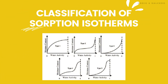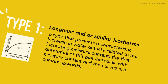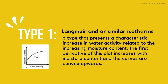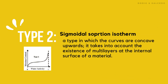Sorption isotherms are also classified according to their shape and processes. For Type 1, the Langmuir and/or similar isotherms, this type presents a characteristic increase in water activity related to increasing moisture content. The first derivative of this flat increases with moisture content and the curves are convex upwards. For Type 2, or the sigmoidal sorption isotherm, the curves are concave upwards and it takes into account the existence of multilayers at the internal surface of a material.